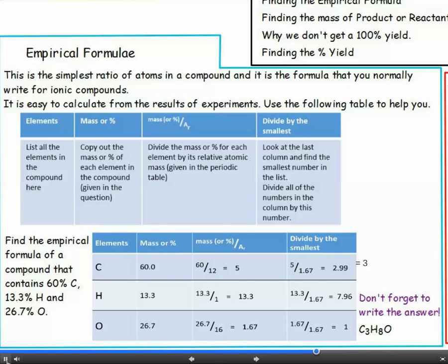In this case, the smallest number is 1.67 for oxygen. Divide the number for carbon by 1.67 and you get 2.99. This is close enough to 3 to be rounded to 3. Doing the same for hydrogen, you get 13.3 divided by 1.67 is 7.96. And that's close enough to a whole number to round up to 8. Dividing the 1.67 for oxygen by 1.67 gives 1.